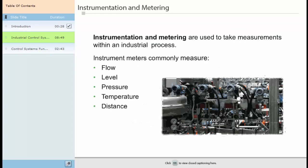Instrumentation is used to measure and control processes within an industrial system. Instruments measure flow, angle, level, pressure, temperature, angle, and distance. Applied instrumentation is one of the main branches of industrial controls.